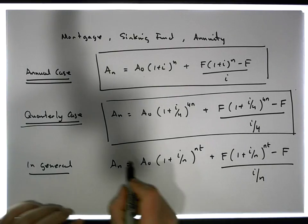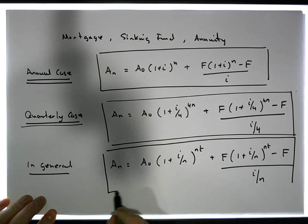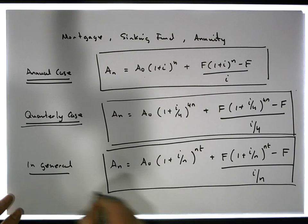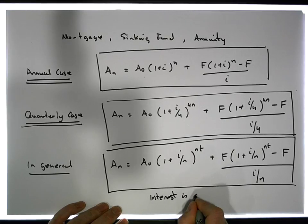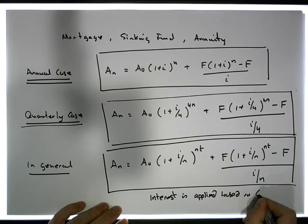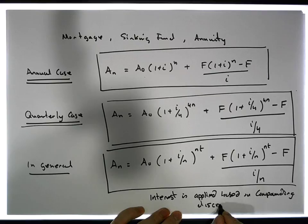That this would be our general case when interest is applied. So this is interest is applied based on compounding, on compounding. And discrete compounding, discrete compounding, not continuous.